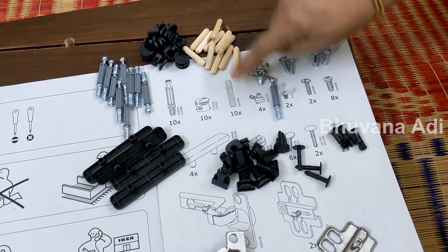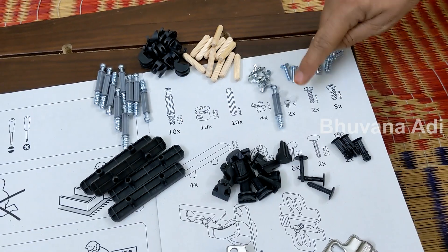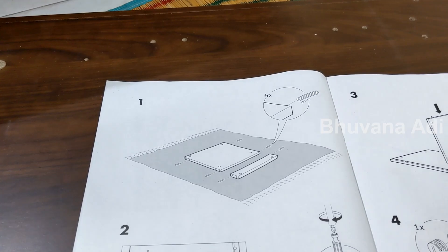10 of these, 10 of these, 10 of these all plugs. Different type of screws. In all, there are 5 planks.